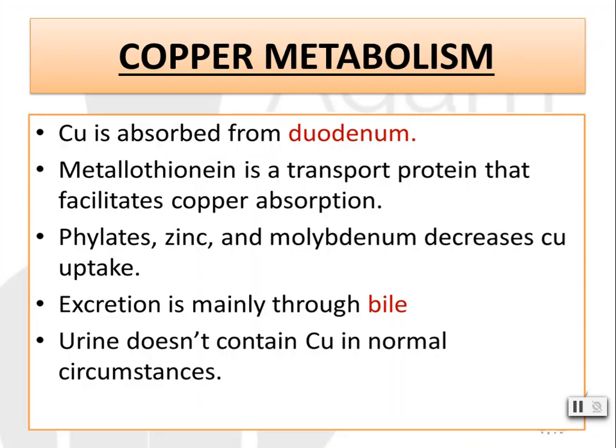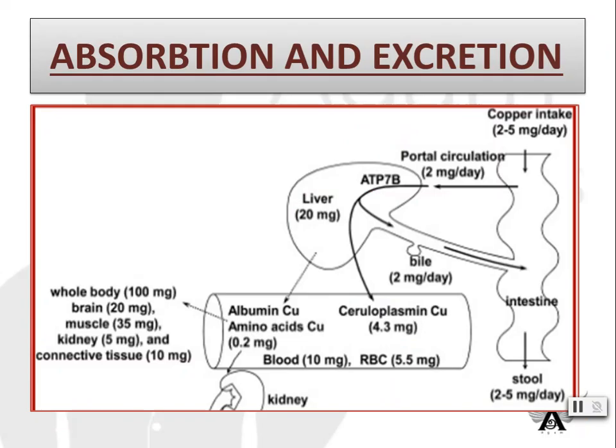Copper metabolism: copper is absorbed from the duodenum, i.e., the intestine. Phytates, zinc, and molybdenum decrease copper uptake. Excretion is mainly through bile, and urine does not contain copper under normal circumstances. Copper is absorbed from the intestine and excreted through bile, i.e., in stool.